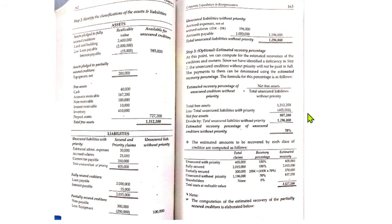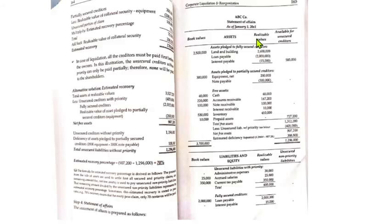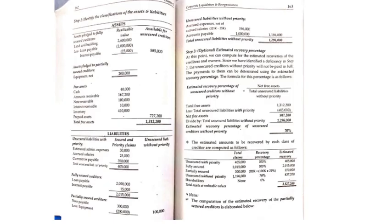Total free assets are 1,312,200 minus 405,000 unsecured liabilities with priority equals net free assets of 907,200. Dividing 907,200 by total unsecured liabilities without priority of 1,296,000 gives an estimated recovery percentage of 70% for unsecured creditors without priority.